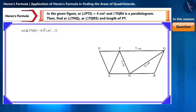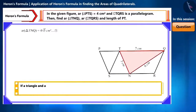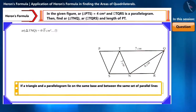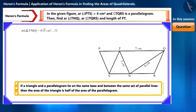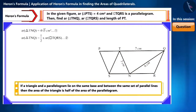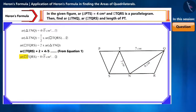Friends, look at triangle TNQ and parallelogram TQRS carefully. Both of these are situated on the same base and between the same parallel lines. We know that if a triangle and a parallelogram lie on the same base and between the same set of parallel lines, then the area of the triangle is half the area of the parallelogram. So we can say that the area of triangle TNQ will be half of the area of the parallelogram. By writing this equation, we can find the area of quadrilateral TQRS as 8 root 5 square centimetres.